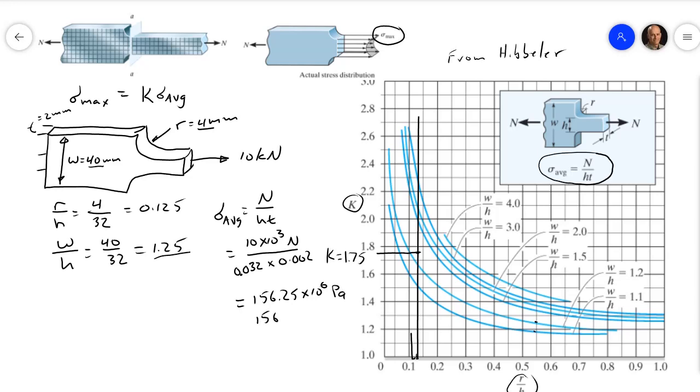And so sigma max will be simply 1.75 times sigma average, which is 156.25, equals 273.4.